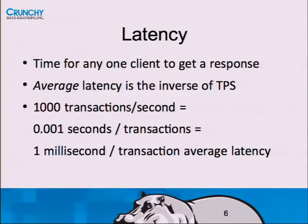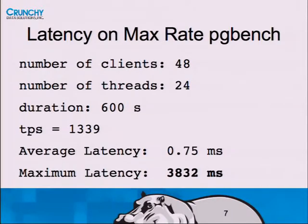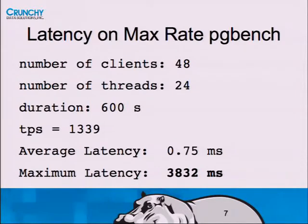If I take the same PG bench test that comes back at 1339 transactions per second - an average latency of three quarters of a millisecond - and actually graph the latency of every individual transaction, you'll find there are transactions that take over 3.8 seconds mixed in with that. This is why you can't just take the TPS number out of PG bench and do anything with it on its own.